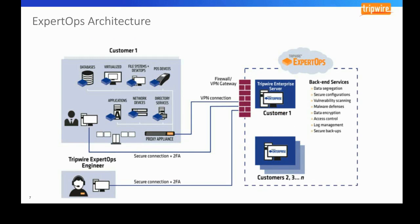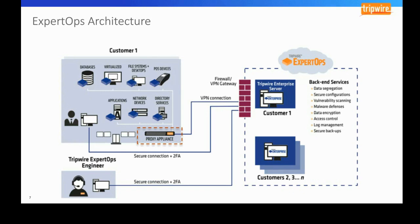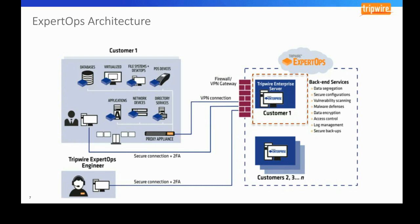Let's take a high-level look at the architecture. We work with the customer to install agents on the assets they want monitored. The agents work regardless of where the assets are — one data center, multiple data centers, or a cloud data center. The agents are configured to route their connections through a proxy appliance, which collects all incoming agent connections and sends them to a cloud environment through a secured VPN connection.